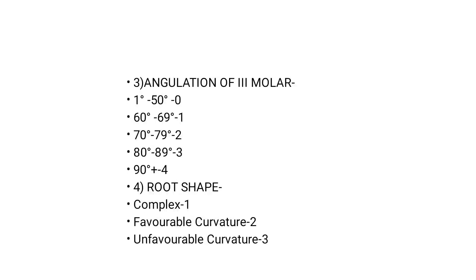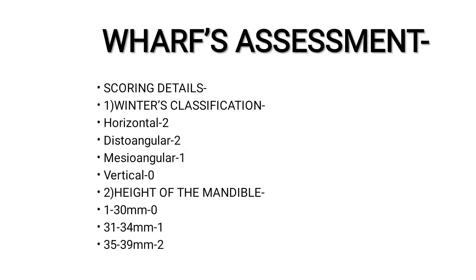Now for angulation of the third molar: 1 to 59 degrees scored zero, 60 to 69 scored one, 70 to 79 scored two, 80 to 89 scored three, and 90 degrees or plus scored four. R stands for root shape: complex root scored one, favorable curvature scored two, and unfavorable curvature scored three.